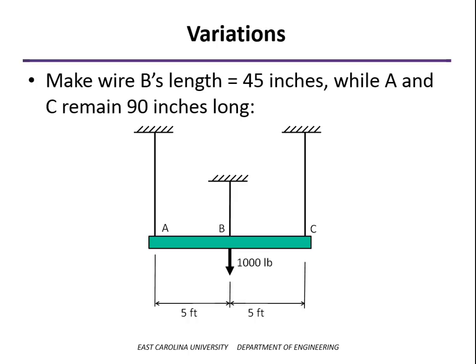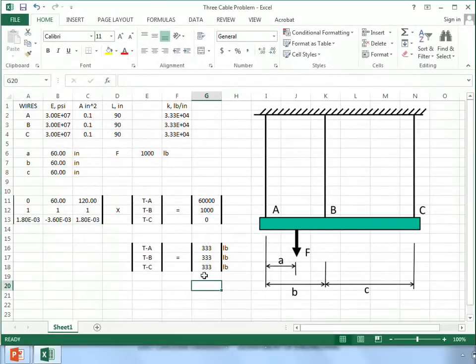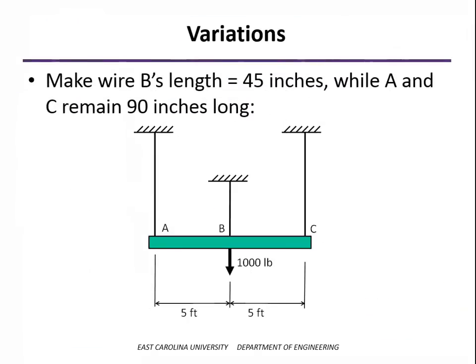So what if we made wire B a little bit shorter, make it half the length that it was before, while keeping A and C both at 90 inches? Well, what's that going to do to the distribution of the load? Well, if you think about the stiffness of the wire, we said it was AE over L. So if we cut the length in half, we've actually doubled the stiffness of that wire. So we would expect that wire B would take more of the load than A and C. In fact, it should take double the amount of load of either A or C. Let's go back and show that on the spreadsheet. And again, the only thing I'm changing here is the length of wire B to 45 inches. And you can see that our answers here are as we expected. Since each wire is still going to be stretched the same amount, but the force required to stretch B is going to be twice that, the force that's required to stretch A or C in equal amounts. So there's our distribution of loads.